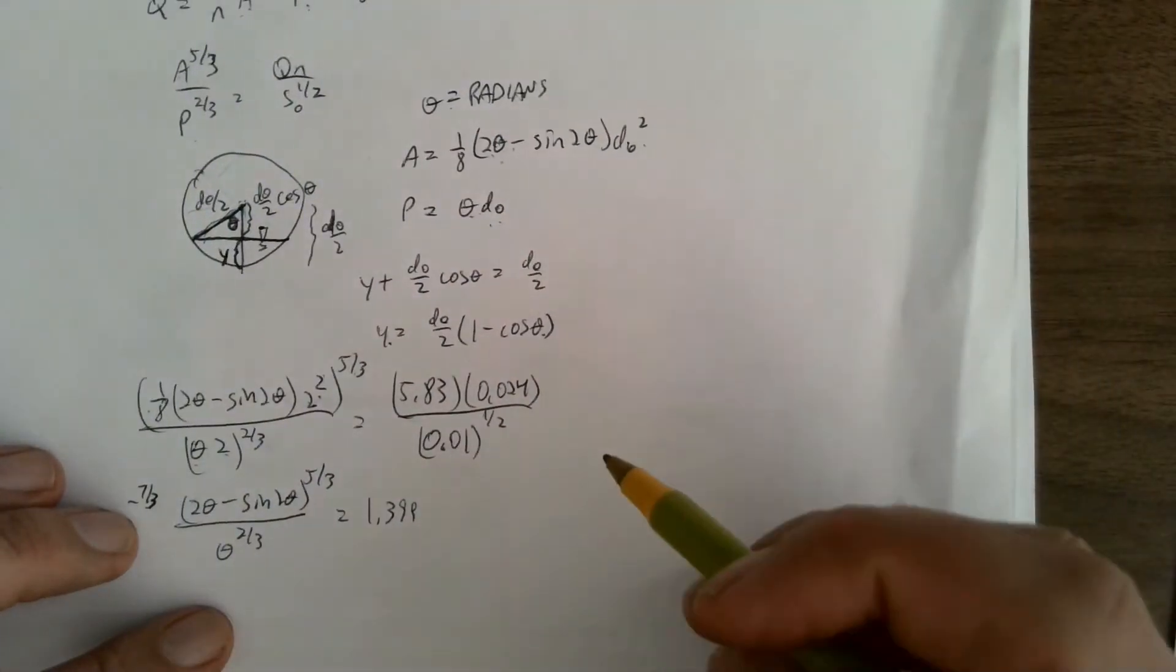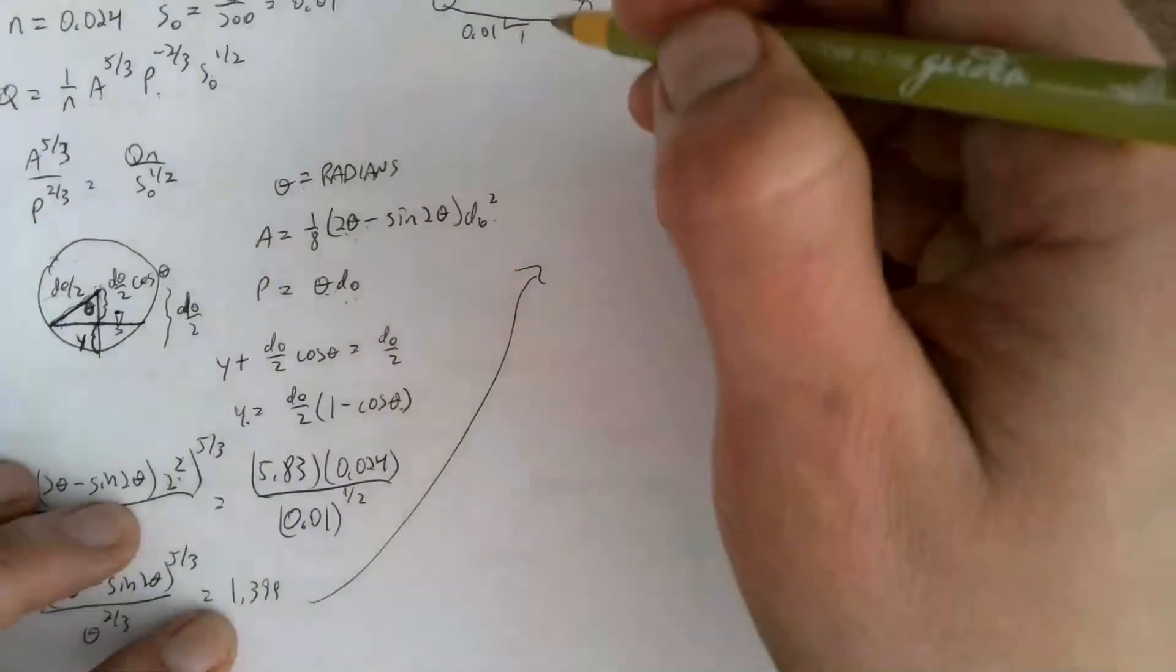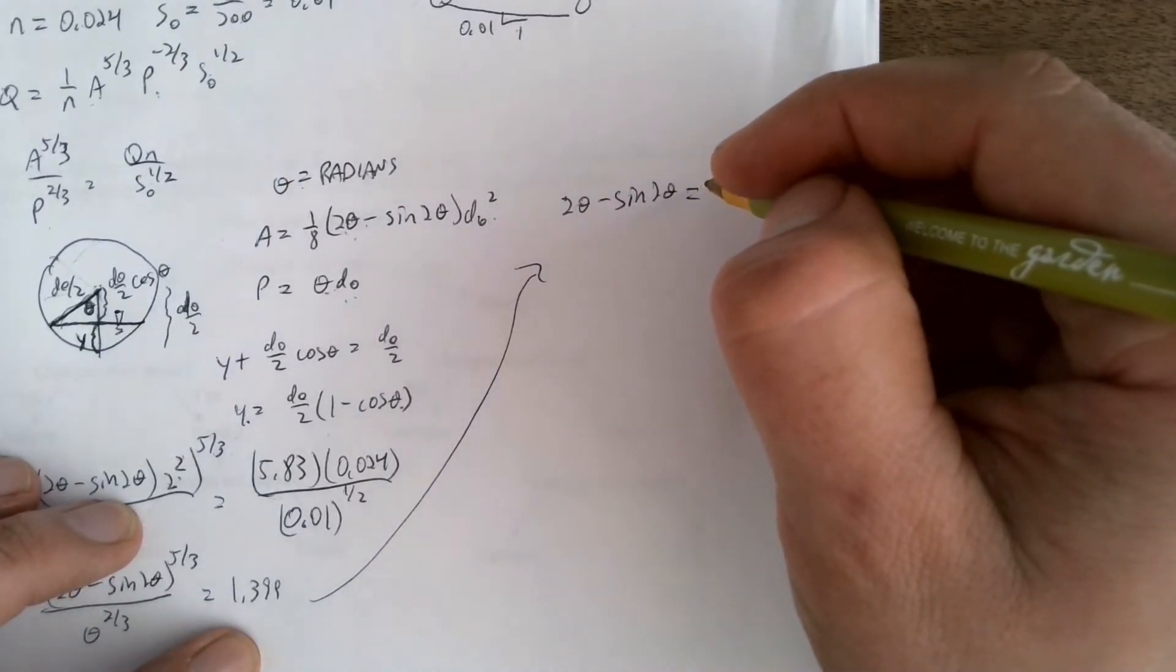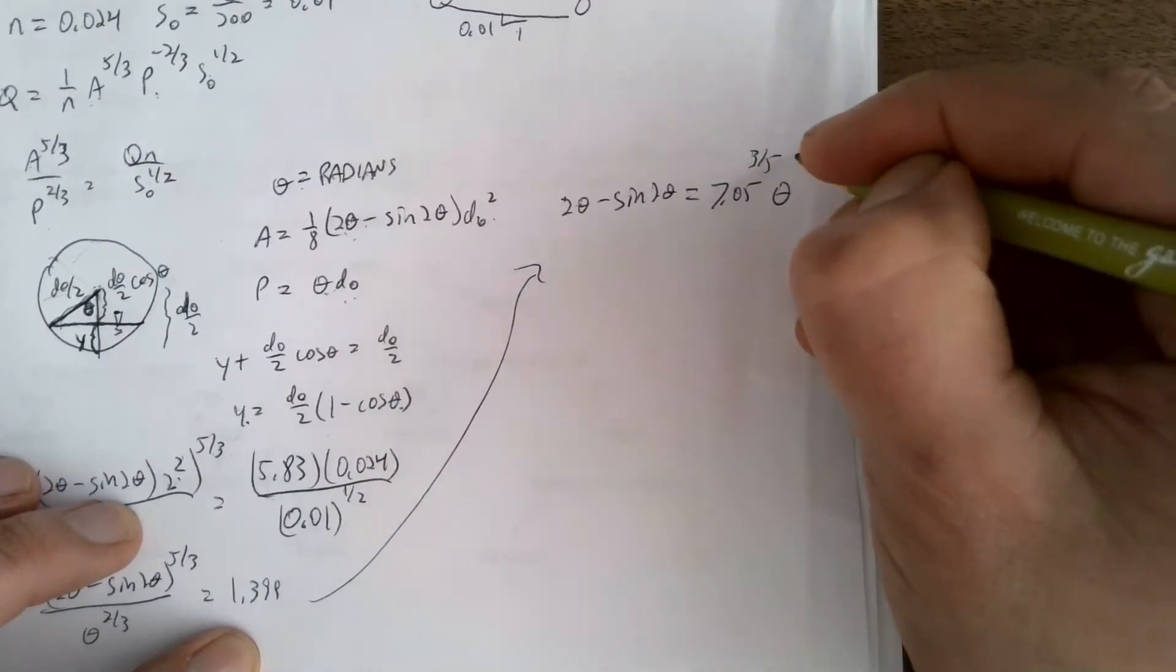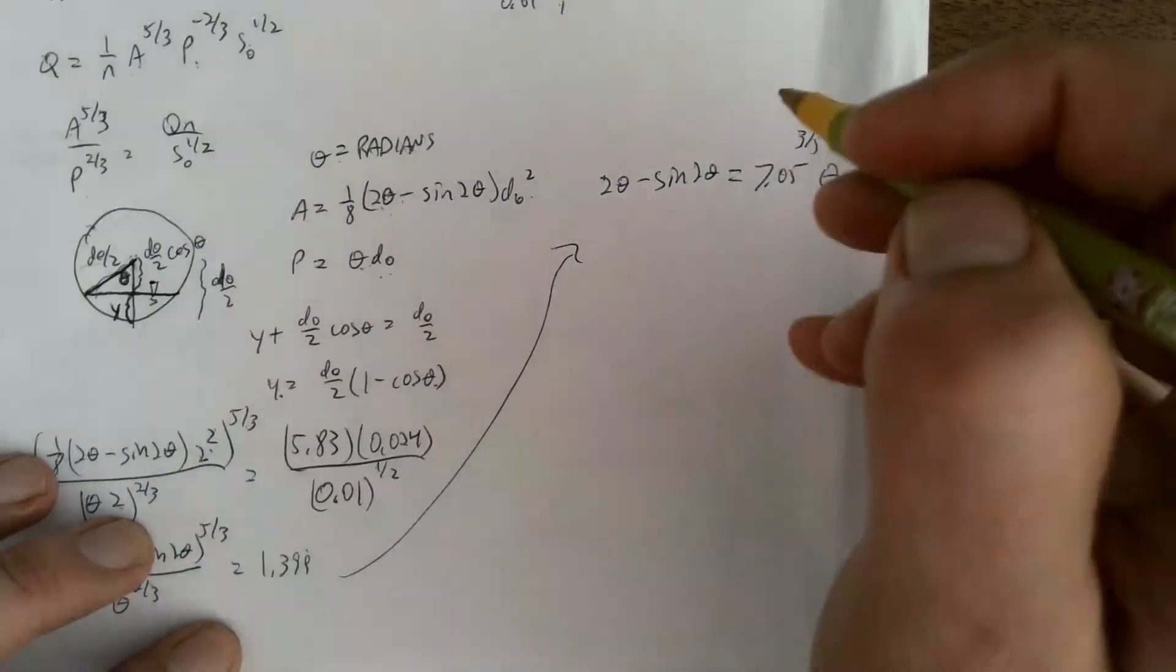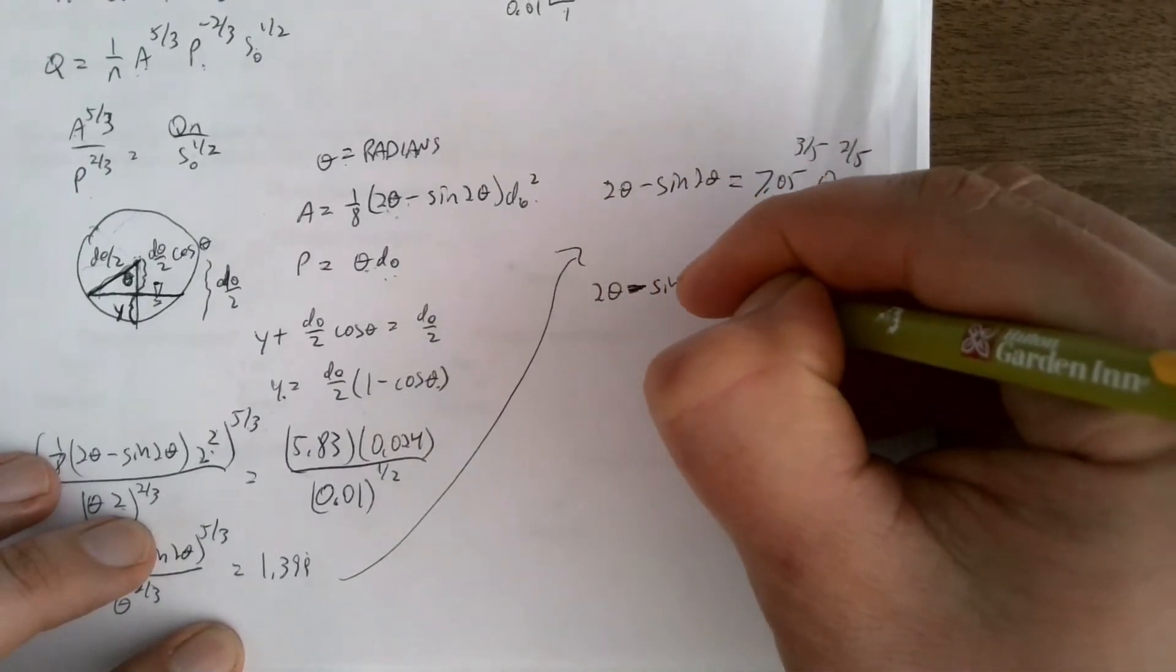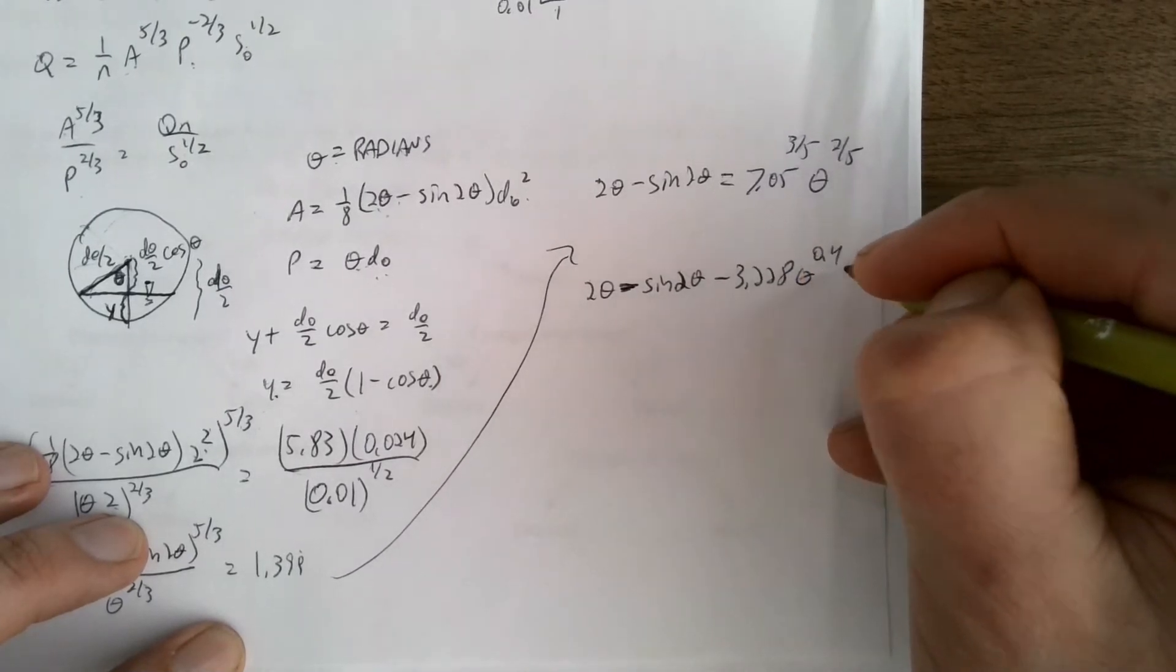And then the right-hand side ends up being 1.399. So if I rearrange this some more, I'm going to work back up over here. I end up with 2 theta minus sine of 2 theta is equal to 7.05 to the 3/5 times theta to the 2/5. Basically, I end up with this term. And so then I can rewrite this whole mess as 2 theta minus sine of 2 theta minus 3.228 times theta to the 0.4 has to be equal to zero.